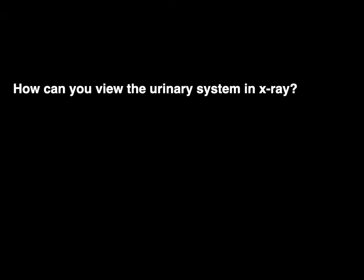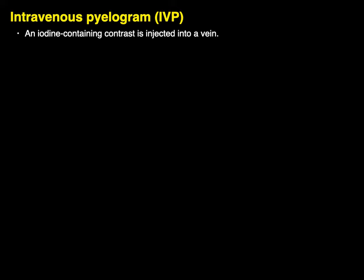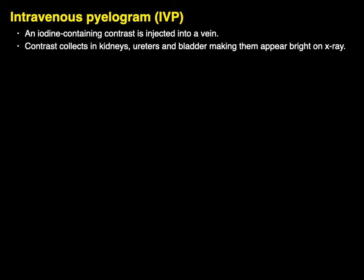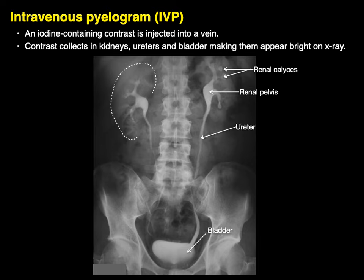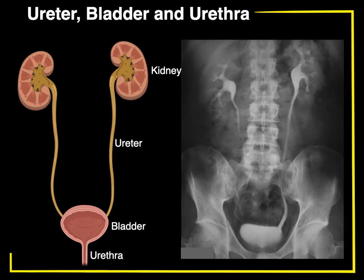We can view the urinary system on x-ray through an intravenous pyelogram, or IVP. An iodine-containing contrast is injected into a vein; after the kidney filters it, the contrast collects in the kidneys, ureters, and bladder, making them appear bright on x-ray. Here we see an IVP showing the kidney outline, renal calyces, the large renal pelvis, and a ureter draining down to the urinary bladder. And that is the ureter, bladder, and urethra in a nutshell.